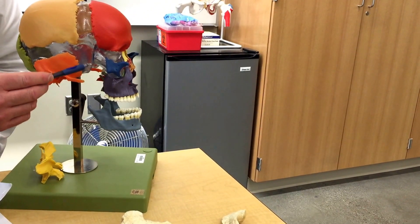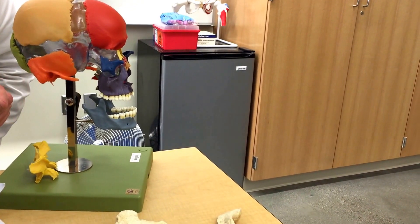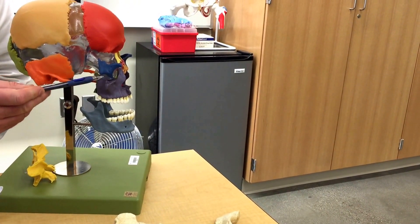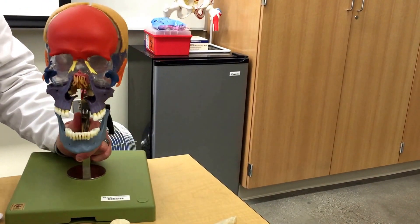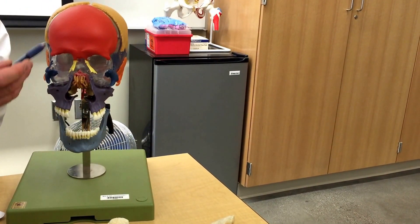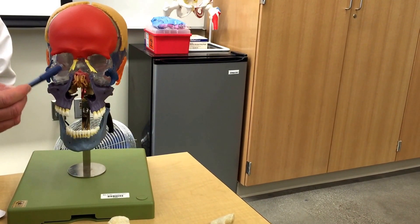Anterior to that, and just in front of the temporal bone, we have the zygomatic bone right here. As we come around to the face, the zygomatic would be part of the orbit of the eye, as would the nasal bone right here.